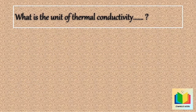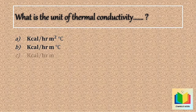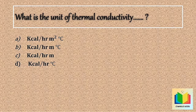Next question: What is the unit of thermal conductivity? Option A: Kilocalorie per hour meter square degree Celsius. Option B: Kilocalorie per hour meter degree Celsius. Option C: Kilocalorie per hour meter. Option D: Kilocalorie per hour degree Celsius.